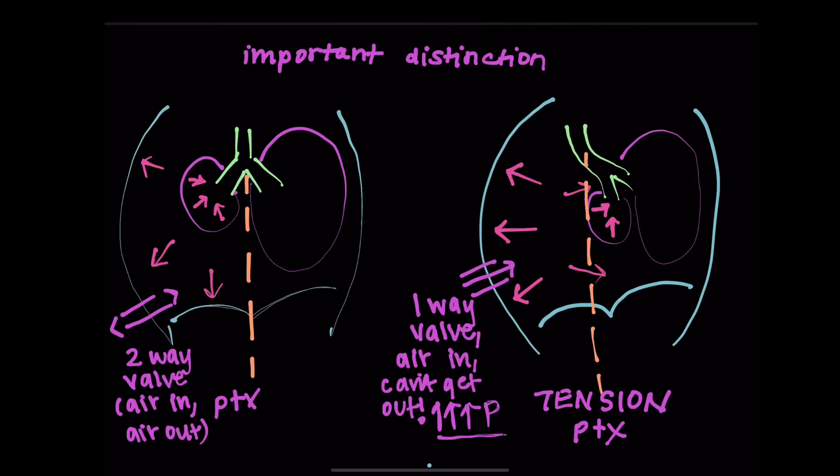So a tension pneumothorax is an emergency, and you see it on TV all the time. And what do they do? They pop a tube in, or they pop in a needle, to create that valve such that the air can exit. So that's something that you can do in this case when you're treating these patients.